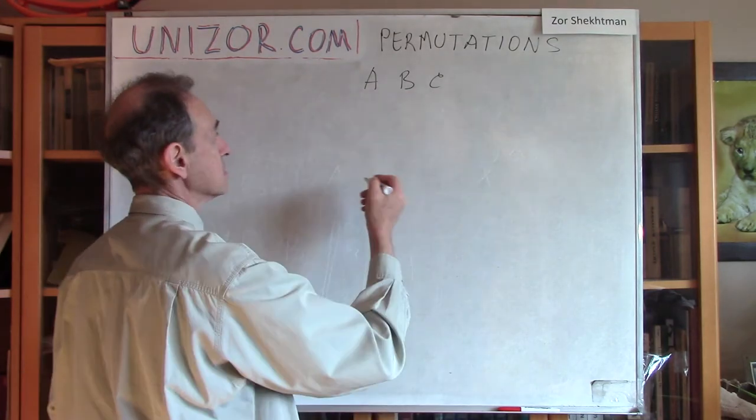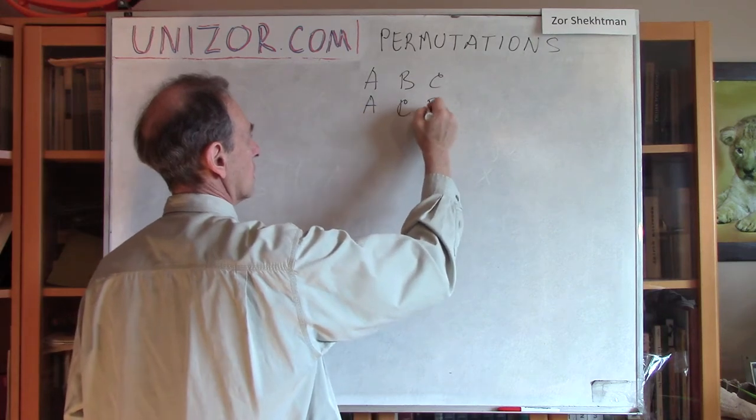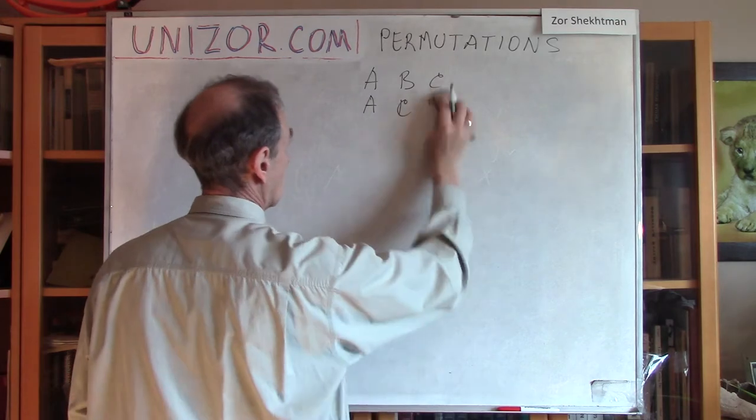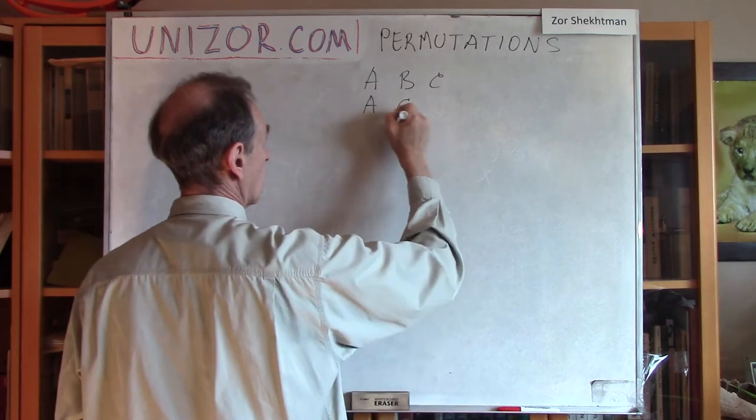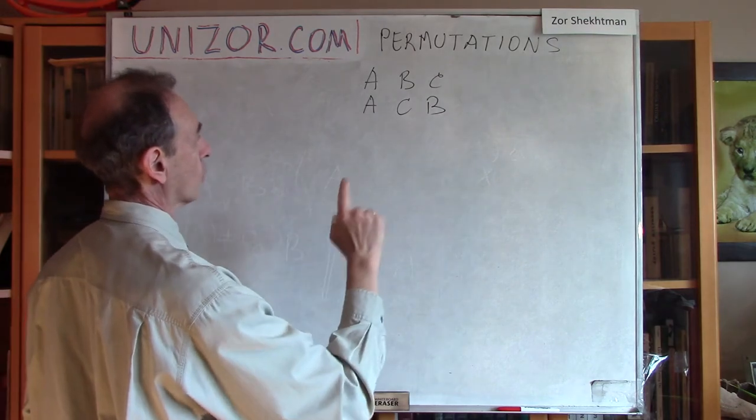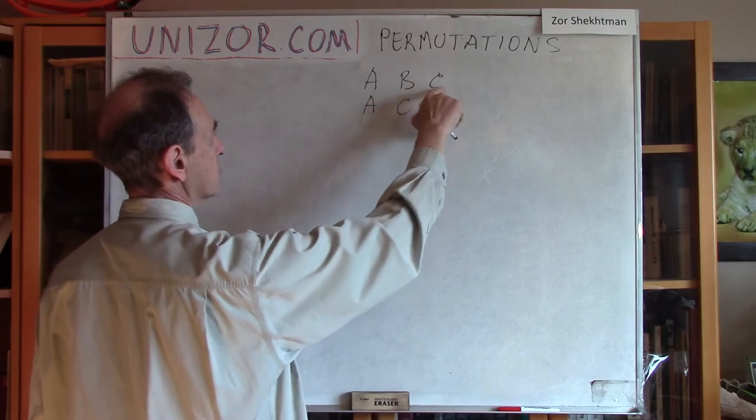You can do it in order A, B, C, or you can do it in order A, C, B. There are no more different orders when A is the first one. After A, it's either B, C or C, B.